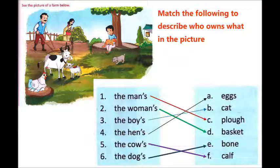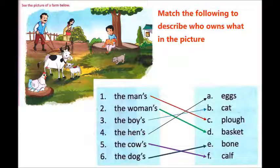Hands — what belongs to the hands? You can match accordingly. Then the cow's — what does the cow have? A calf. Then the dog's — what belongs to the dog.